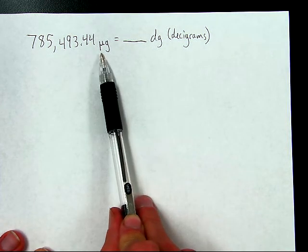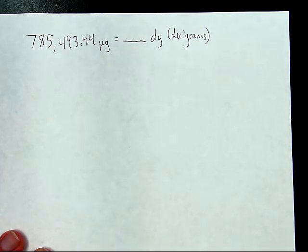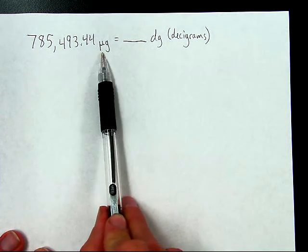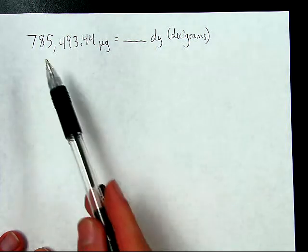You may know how many micrograms are in a gram, but you probably don't know how many micrograms are in a decigram. So in order to get around that problem, we're going to do a conversion with more than one step. Instead of going directly from here to here, we're going to go from micrograms to grams, and then from grams to decigrams, in order to convert this to our final answer.